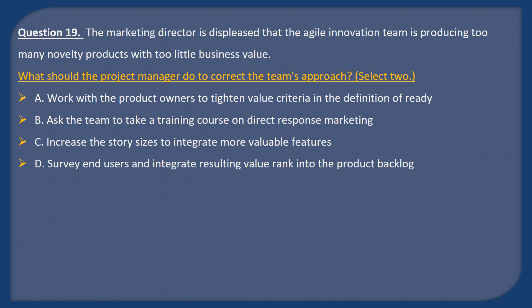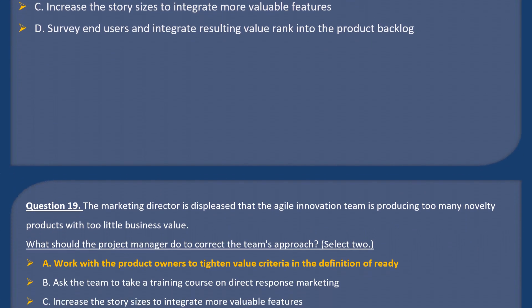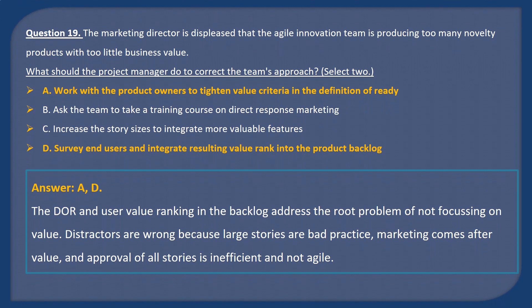Question 19. The marketing director is displeased that the Agile innovation team is producing too many novelty products with too little business value. What should the project manager do to correct the team's approach? Select two. A: Work with the product owners to tighten value criteria in the definition of ready. B: Ask the team to take a training course on direct response marketing. C: Increase the story sizes to integrate more valuable features. D: Survey end users and integrate the resulting value ranking into the product backlog.